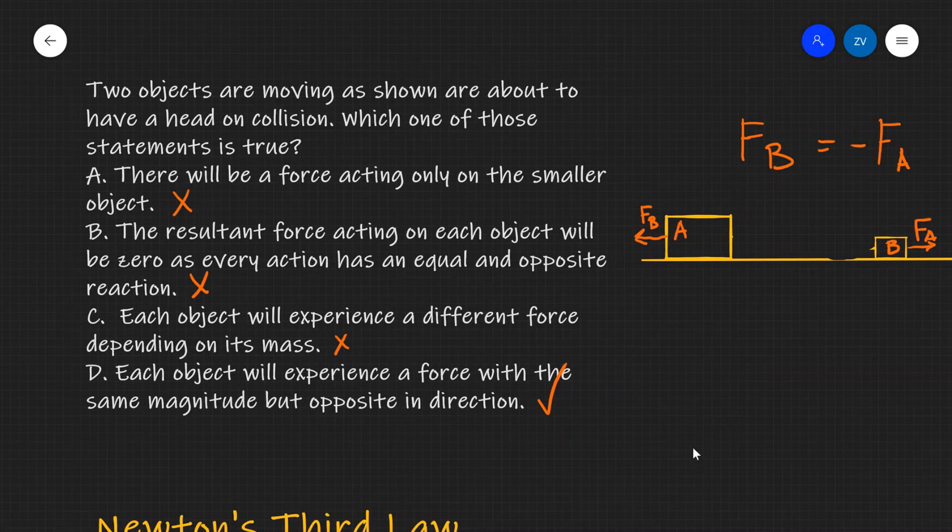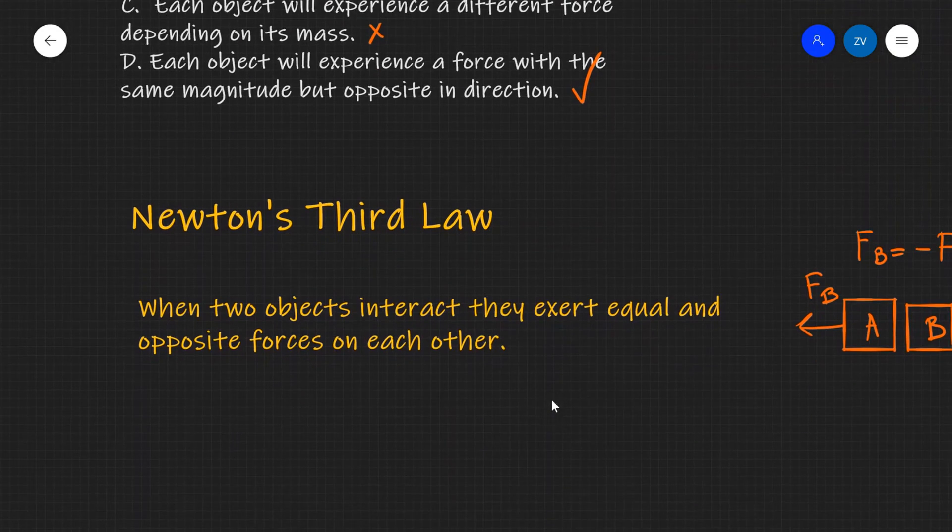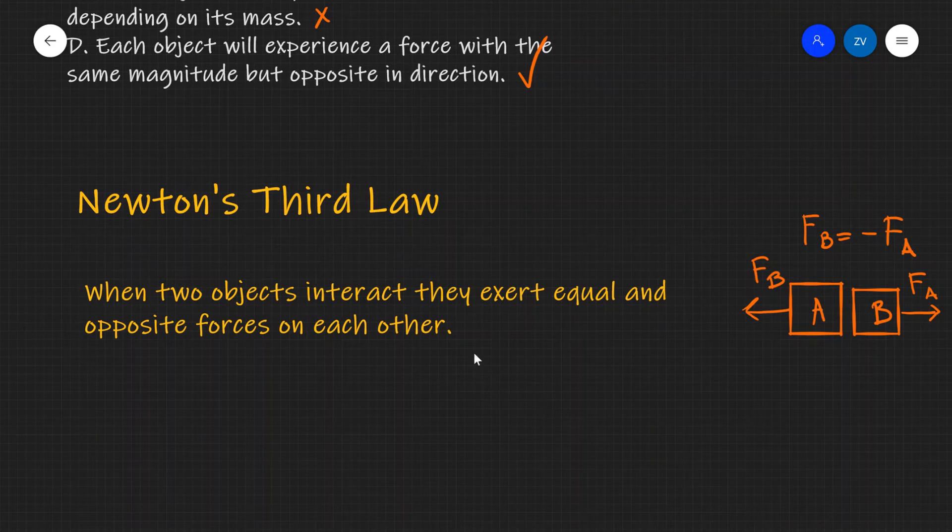This brings us to the definition of Newton's third law. So Newton's third law says that when two objects interact they exert equal and opposite forces on each other.